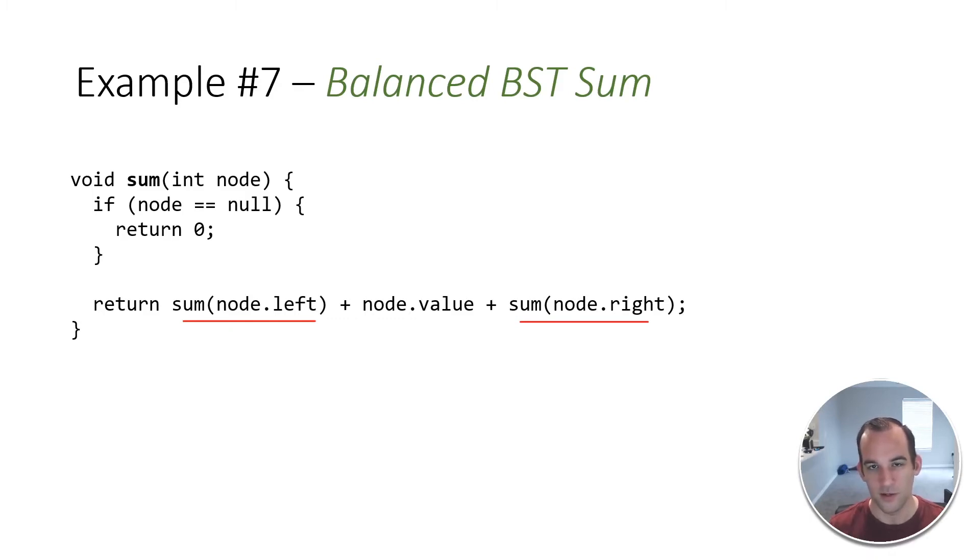So there's some n number of nodes in the tree. We don't know. We're just given a node that we're going to start out. I mean, typically if we're trying to find the sum of the balanced binary search tree, typically we're going to start at the root. So, you know, it doesn't really matter. But let's say we're starting at the root. We're going to be hitting every node in the tree.